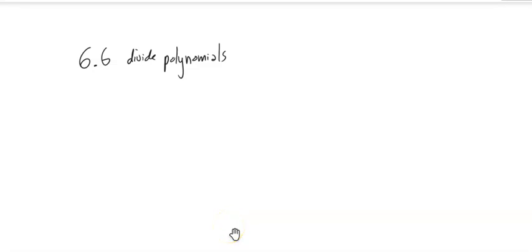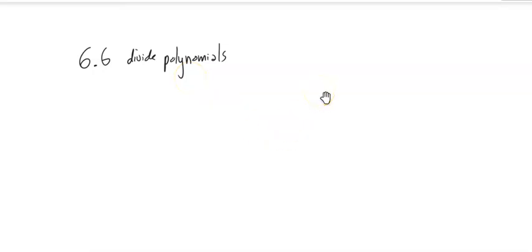Welcome to Math 98. This is section 6.6. We are going to talk about dividing polynomials. We've done some division last time where it's just a monomial over a monomial — no pluses or subtraction going on there.